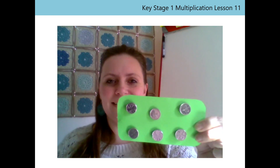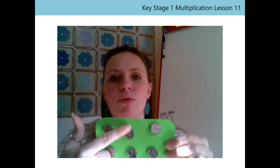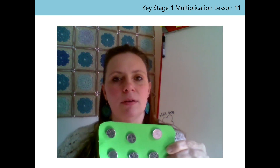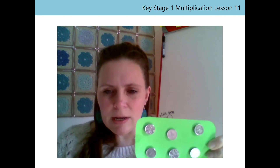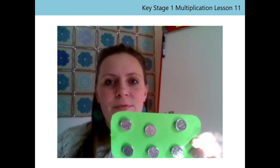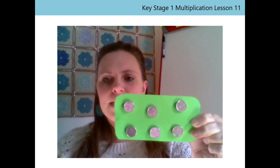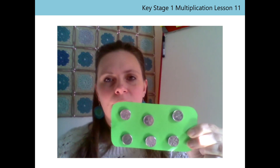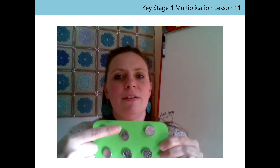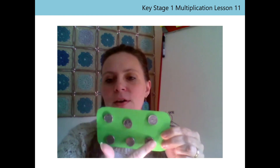Did you just see it? Well done, but let's count them together. 1, 2, 3, 4, 5, 6. Each coin has a value of 5p. So what is the value of this set altogether? We could count in 5s: 5, 10, 15, 20, 25, 30.